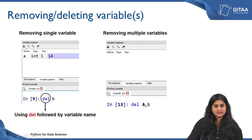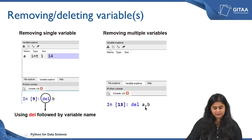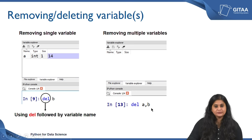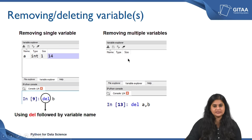Instead of removing a single variable, we can also remove multiple variables from the environment. We still use the same command del, but instead of just one variable you give two variables separated by a comma. Once you hit Enter you can see that the entire memory has been flushed out and both these values have been deleted.